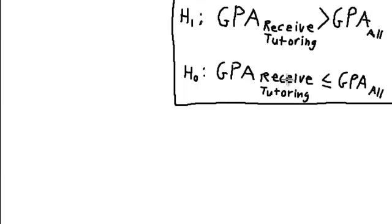So I present to a student an alternative view, something that I'm going to have to convince the student about. This alternative hypothesis is that the people who receive tutoring, that their GPA is greater than that of the college GPA.